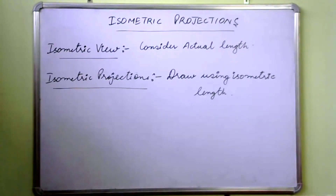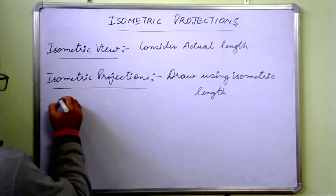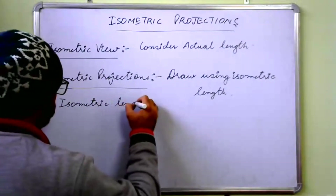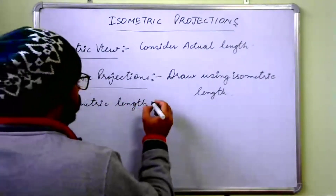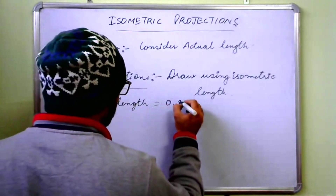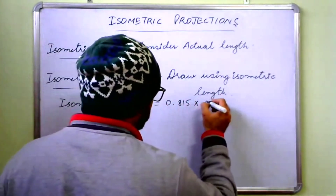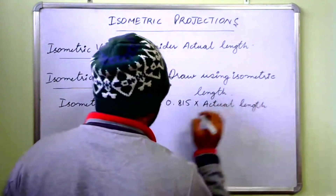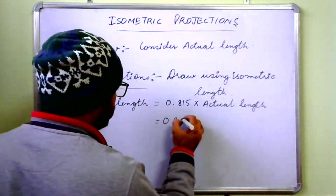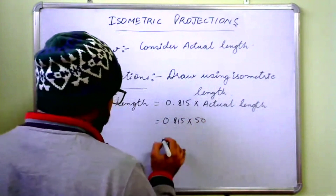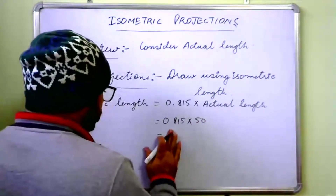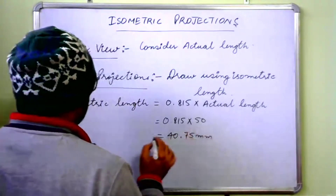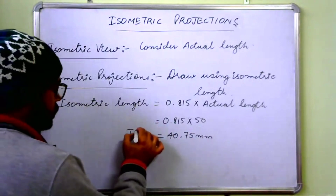For finding out the isometric length, there is also an analytical method. Isometric length is equal to 0.815 times the actual length. So if the actual length was 50 mm, then 0.815 into 50 gives approximately 40.75 mm — that is the isometric length with respect to 50 mm.